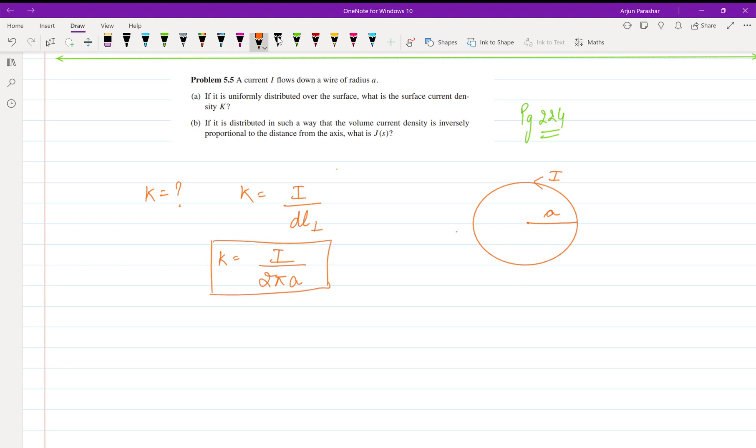Now coming to the next part B, which says that J is the volume current density. J is inversely proportional to the distance. J is a function of S, that is why I'm using S here. So it is inversely proportional, so removing the proportionality sign we get a constant. Let us use M here because K is for surface current density, so M is the constant.